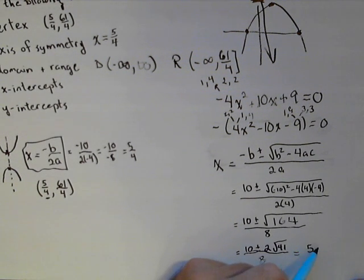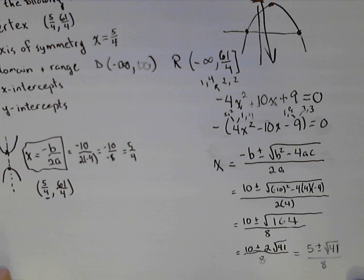So, that's 5 plus or minus square root of 41 all over 4. And that's a nice simplified answer. So, those are our two x-intercepts. The plus or minus accounts for both of them.